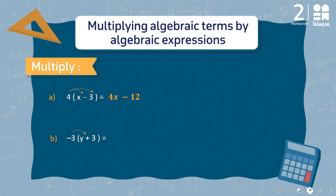It will be negative 3 times y first, and then negative 3 times 3. So negative 3 times y is negative 3y, and negative 3 times 3 is negative 9.